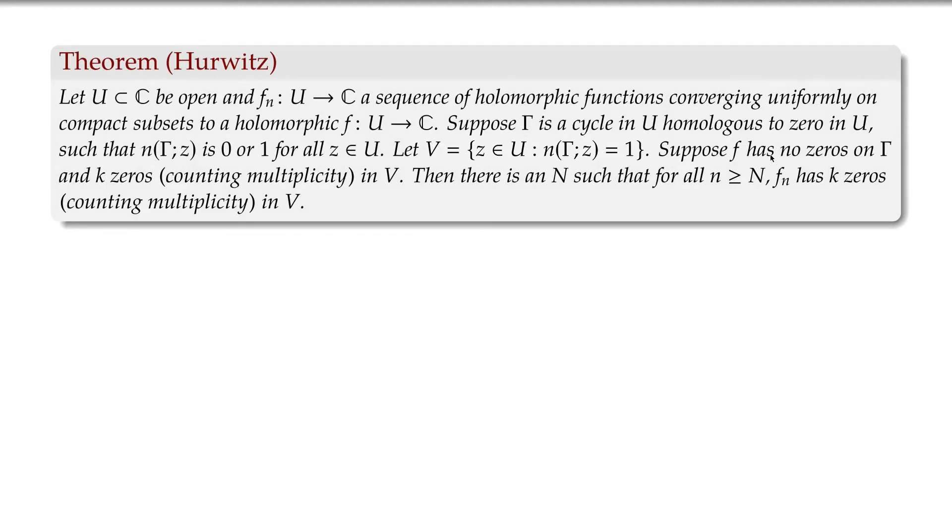And let's suppose that F has no zeros on gamma, on this cycle. And inside, in V, it has K zeros up to multiplicity. Then, for a large enough N, F sub N has K zeros up to multiplicity in V as well. So basically, the number of zeros of F_N has to stabilize, and it will be exactly K.